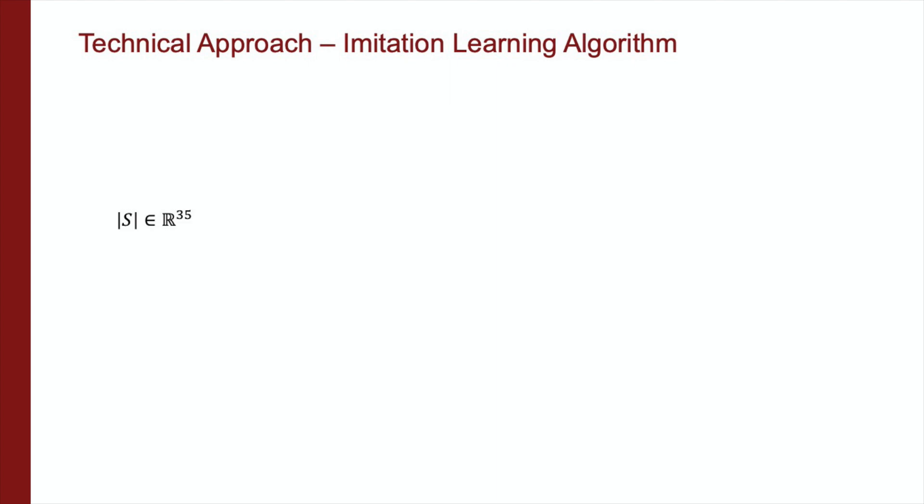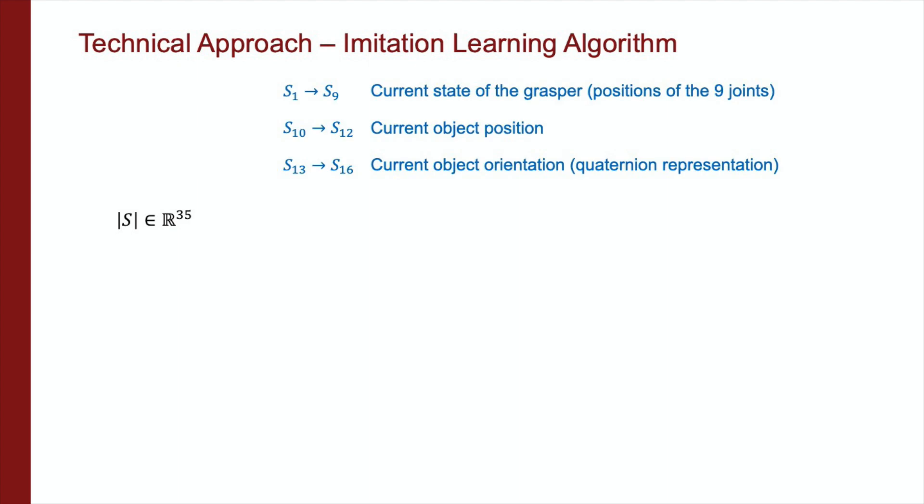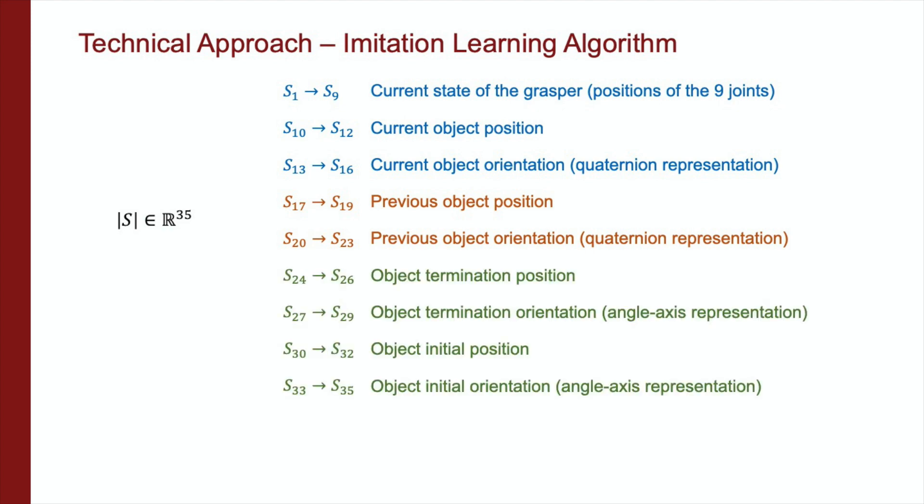Our state space has a dimension of 35, which includes the following information. State 1-16 contains all information from current frame, including joint positions of the grasper, object position, and object orientation. State 17-23 includes object position and orientation of the previous frame. And state 24-35 includes object initial and target poses. The 9-dimensional action space contains the desired joint positions of the next frame.